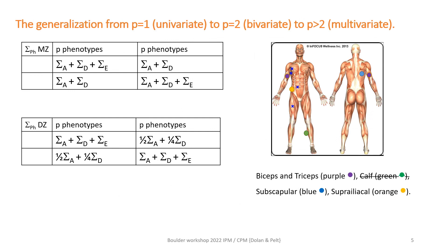The data we're going to consider are again based on our running example, the skinfold data. I'm going to go from skinfold measured at two locations — biceps and triceps — to skinfold measured at four locations, as shown on the left-hand side of this slide. That's at the back near the shoulder bone, on the side, and biceps and triceps. The color codes are orange, light blue, and purple for biceps and triceps. The expected covariance matrix in the MZT set is also shown on the slide. It's an ADE model, and we're decomposing the 4x4 covariance matrix into sigma A, sigma D, and sigma E.